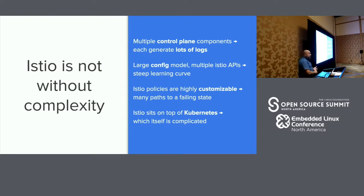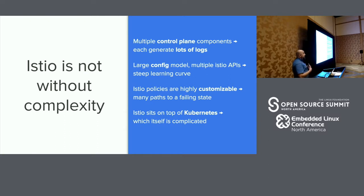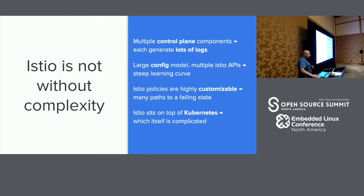You are adding additional control plane components within your Kubernetes cluster, and those are generating lots of logs — more things to manage. It's got a pretty deep API; it's incredibly composable and you can build really cool things with it, but it's got a lot of moving parts. Implementing security policy or encryption policy is highly customizable, which means it's really easy to shoot yourself in the foot. And Istio's control plane sits on top of Kubernetes, which itself is complicated. You can add VMs or external services to a mesh, but the control plane components are still on top of Kubernetes. So there's a lot to take into account.